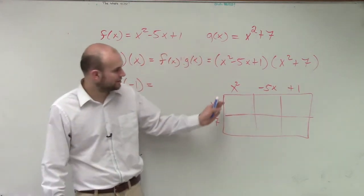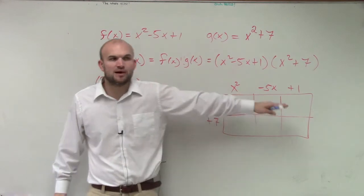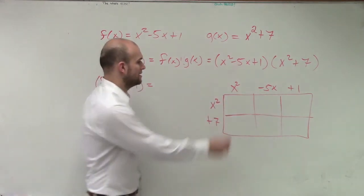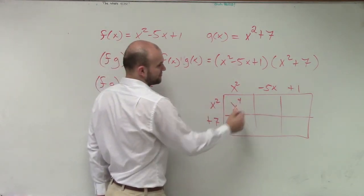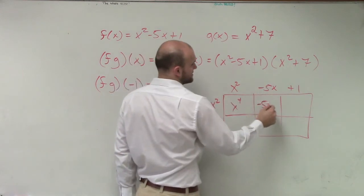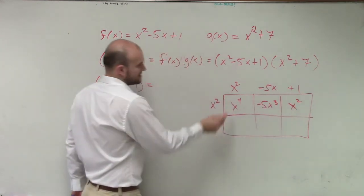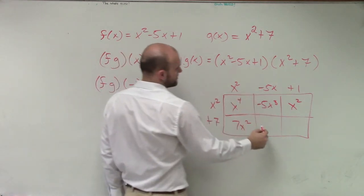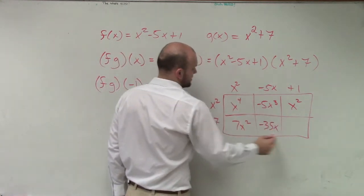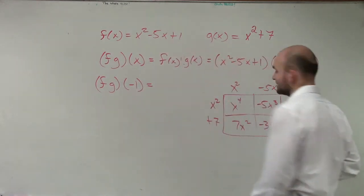So when I'm multiplying, all I'm simply doing is multiplying to find the area of each box and then adding them up. x squared times x squared is x to the 4th. x squared times negative 5x is negative 5x cubed. x squared times 1 is x squared. 7 times x squared is 7x squared. 7 times negative 5 is negative 35x. And 7 times 1 is positive 7.